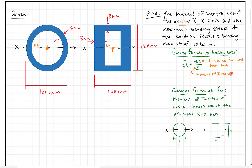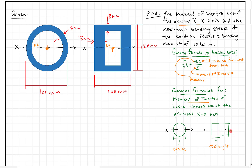I is the moment of inertia — that's why we need it, so we can find the bending stress. M is the moment. We also need the moment of inertia formulas for our two basic shapes. For a circle with diameter D: IX = πD⁴/64. For a rectangle with base B and height H: IX = BH³/12.